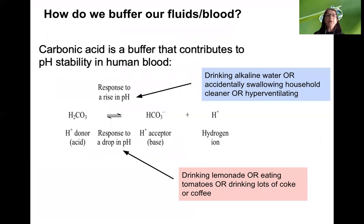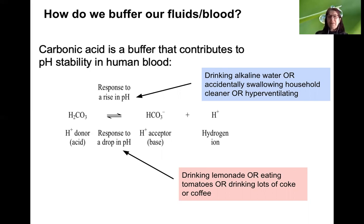How do we buffer our blood? Carbonic acid, H2CO3, is a buffer that contributes to the stability of pH in human blood. In response to a rise in pH — when blood becomes basic, such as if you drink alkaline water or accidentally swallow household cleaner, or if you're hyperventilating — you have fewer hydrogen ions in your blood.